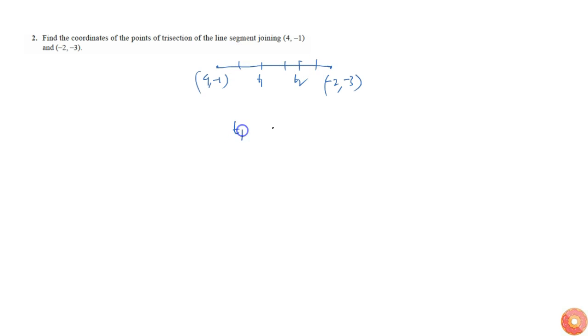This means that t1 divides in the ratio 1:2 and t2 divides in the ratio 2:1. Once we know the values of ratios, we know how to find the points.